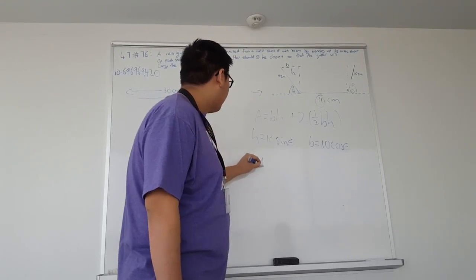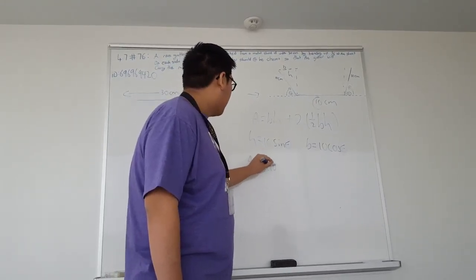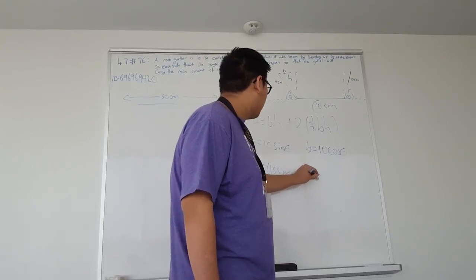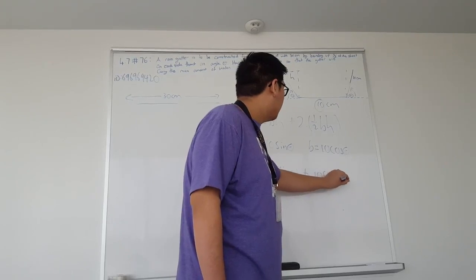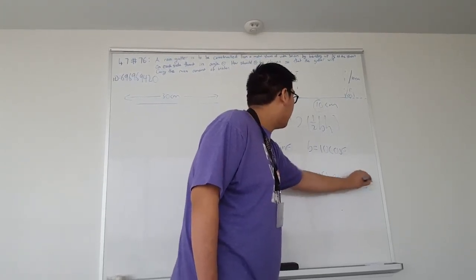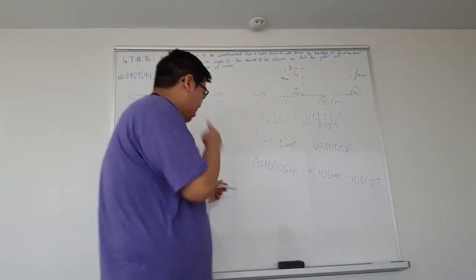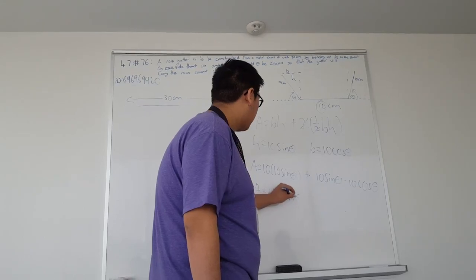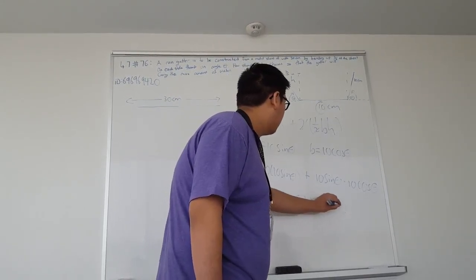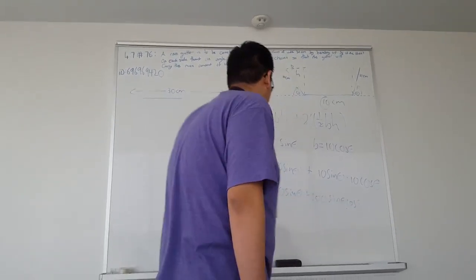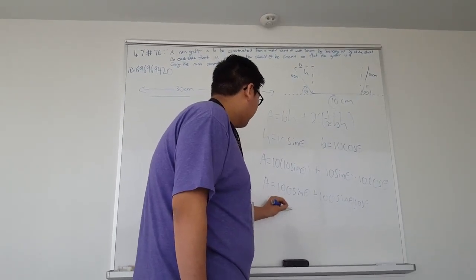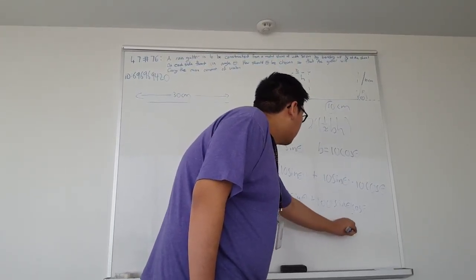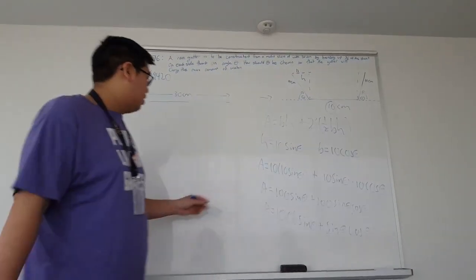And now we can plug in all of our numbers: 10 times 10 sine theta, since our height is the same for everything, plus 10 sine theta times 10 cos theta. And our two's just cancel out. And this would actually simplify to 100 sine theta plus 100 sine theta cos theta. And we can actually bring a factor out, 100 from here. So we get sine theta plus sine theta cos theta. Oh, I ran out of room.